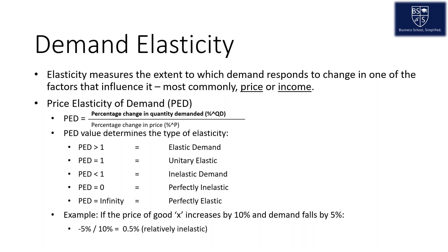Price elasticity of demand is the equation used when measuring demand's elasticity. You simply put some numbers into this equation as shown in the PED, and the number it returns explains the elasticity of demand. For example, if the price of good x increases by 10% and the demand falls by 5%, you would divide negative 5 by 10, which returns 0.5, demonstrating that the demand elasticity is relatively inelastic, as you can see using this diagram.